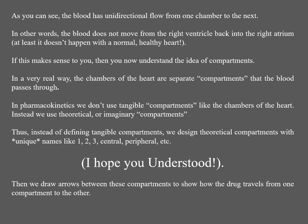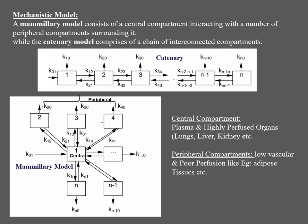Then we draw arrows between these compartments to show how the drug travels from one compartment to the other. After naming the compartments — one compartment, two compartment, three compartment — between the compartments we draw arrows that provide information about how the drug travels from one compartment to the other. Based on this, everyone should have an imaginary idea about how a compartment model looks.